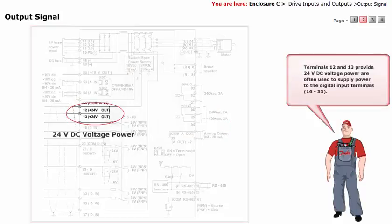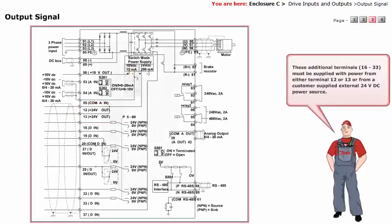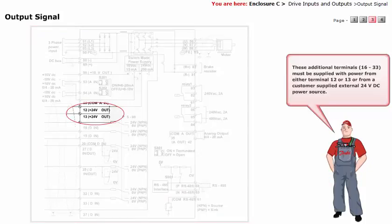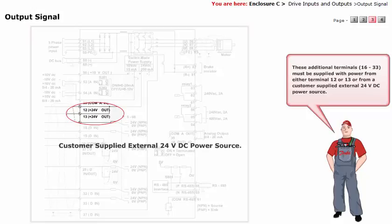Terminals 12 and 13 provide 24 volt DC voltage power, are often used to supply power to the digital input terminals 16 to 33. These additional terminals 16 to 33 must be supplied with power from either terminal 12 or 13, or from a customer supplied external 24 volt DC power source.